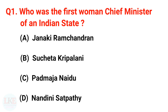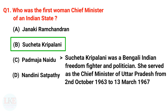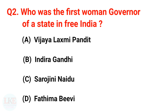First question: Who was the first woman Chief Minister of an Indian state? Options: A) Janaki Ramachandran, B) Sucheta Kripalani, C) Padmaja Naidu, D) Nandini Satpathi. The right answer is option B, Sucheta Kripalani. She was a Bengali Indian freedom fighter and politician who served as Chief Minister of Uttar Pradesh from 2nd October 1963 to 13th March 1967.